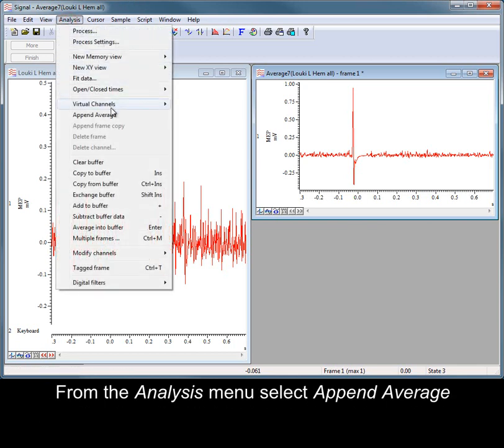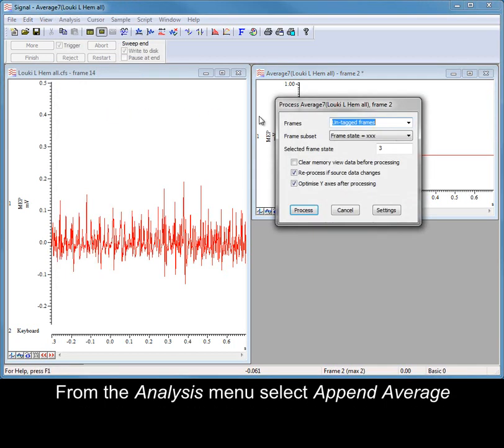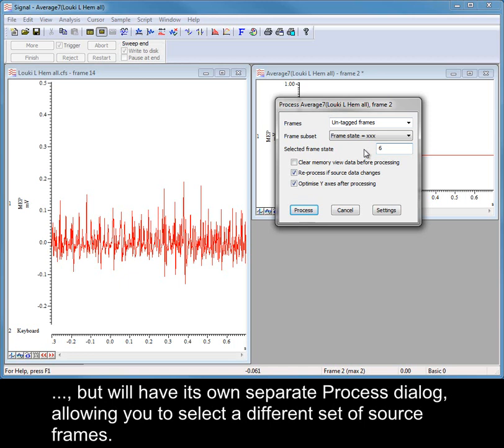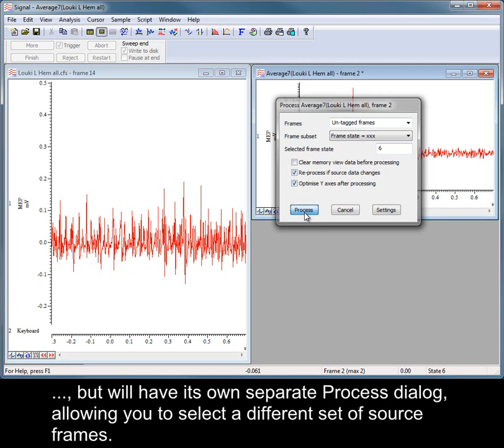From the Analysis menu, select Append Average. Frames appended to an average will have the same process settings as the original average view, but will have its own separate process dialog, allowing you to select a different set of source frames.